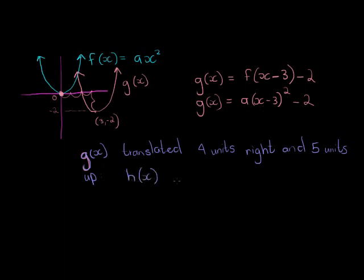H of X is equal to G of X, but G of X is moved four units to the right. So in other words, things are happening sooner. So it's coming four units this way. Things are happening sooner. That means I must add to make things happen sooner. So I add four units to the right and five units up, which means every Y value will get five extra values or units. So plus five.